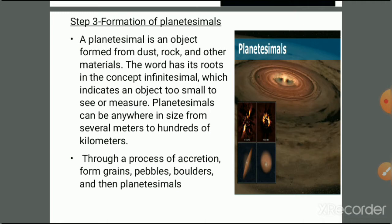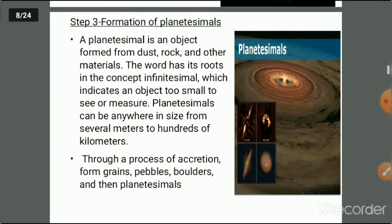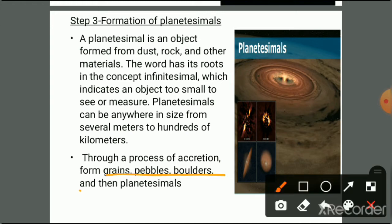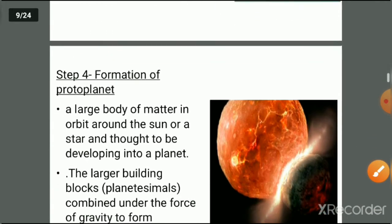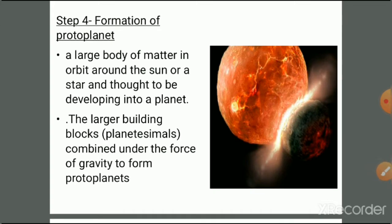In this disk, particles like gas and dust get accreted to form grains, pebbles, and powders, and later form planetesimals. A planetesimal is an object formed from dust, rock, and other materials. The word has its roots in the concept of 'infinitesimal,' indicating an object too small to see or measure. Planetesimals can range in size from several meters to hundreds of kilometers.